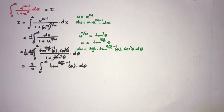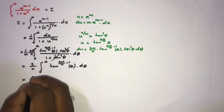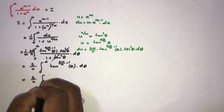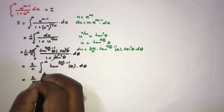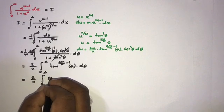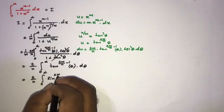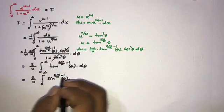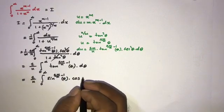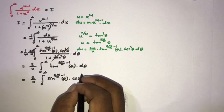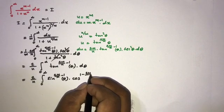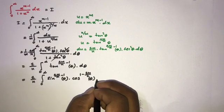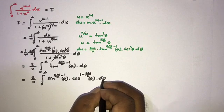Now, using tan theta equals sin theta over cosine theta, we can write this as 2 over n times the integral from 0 to infinity of sin to the 2m over n minus 1 of theta times cosine to the 1 minus 2m over n of theta, d theta.